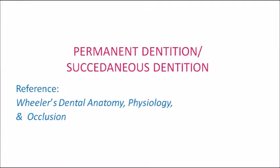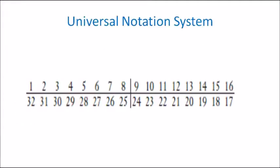We will be dealing with the second chapter in oral anatomy, which is the permanent dentition or succedaneous dentition. We have already seen the primary dentition, so compared to that, permanent dentition is a relatively more important topic and more questions have been asked from this chapter. The reference for this chapter is Wheeler's Dental Anatomy textbook.